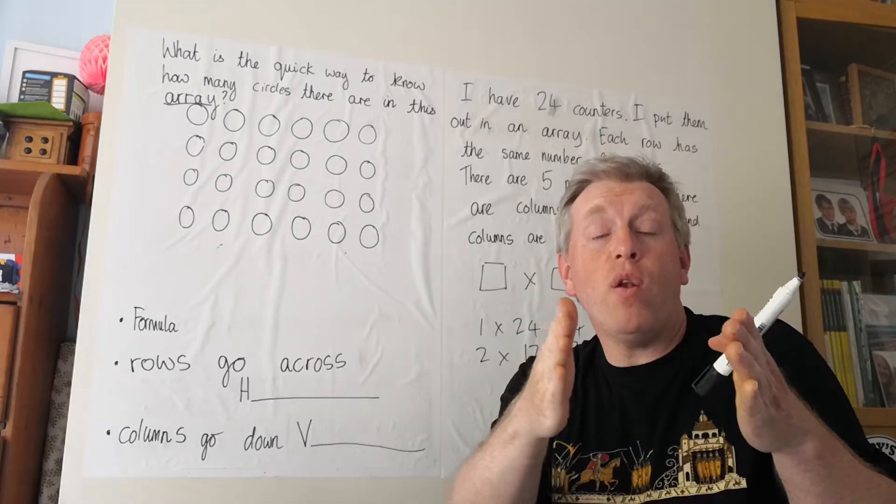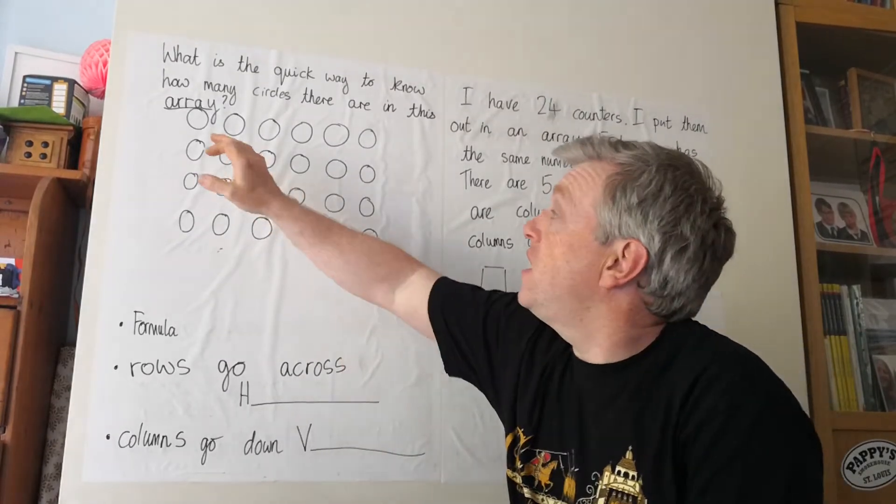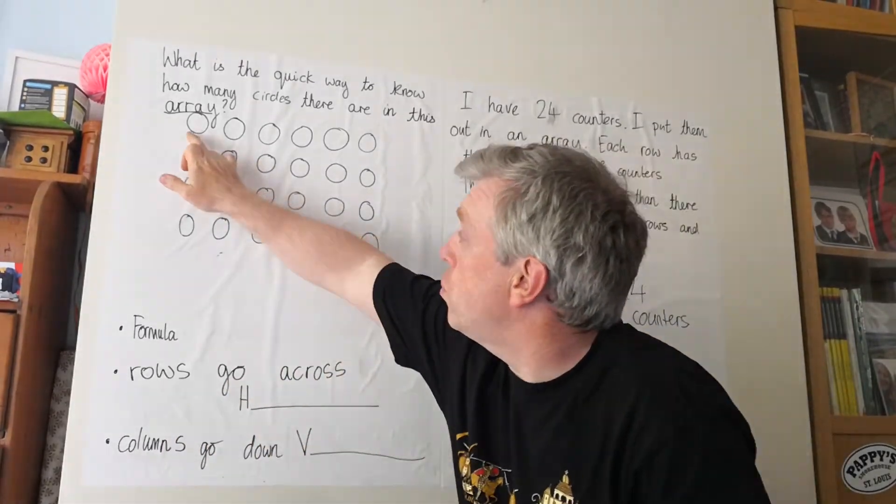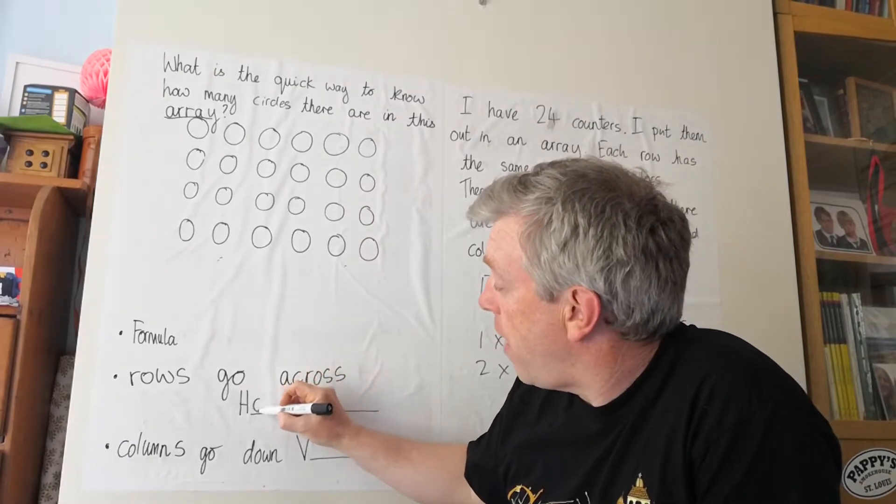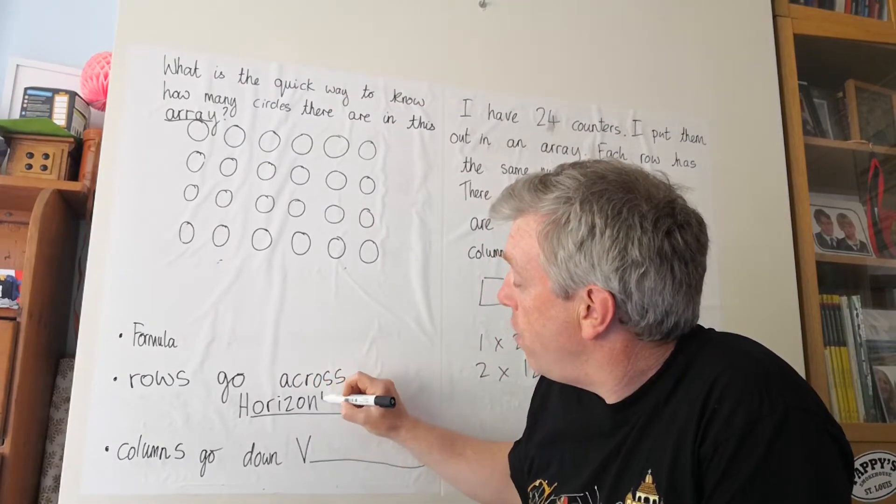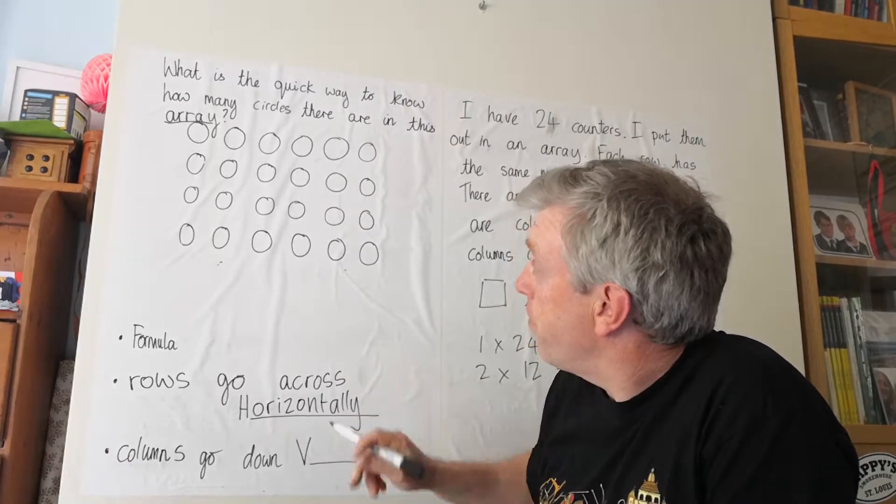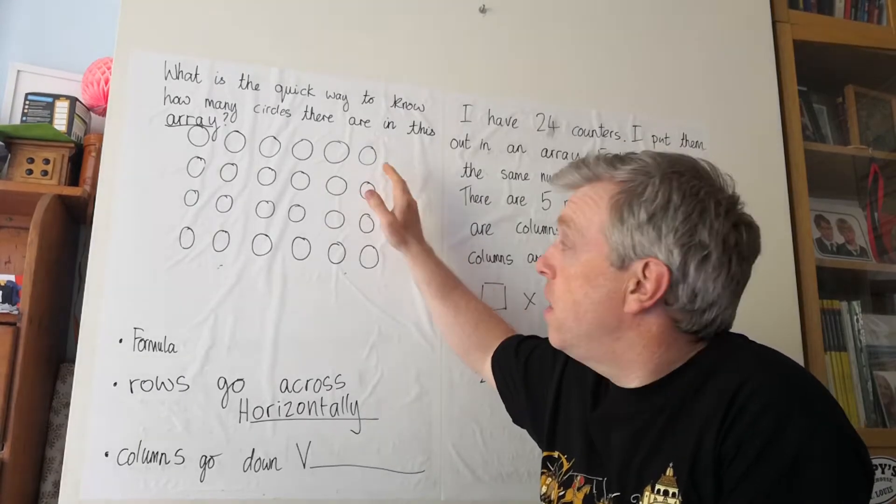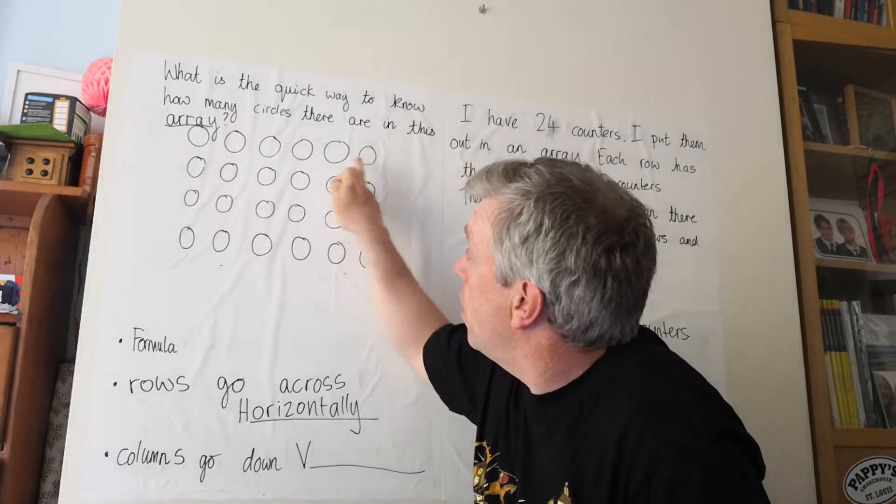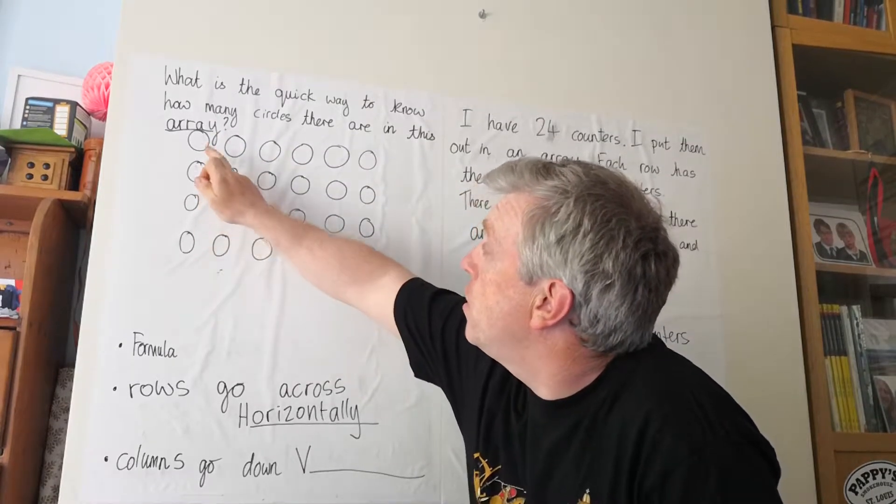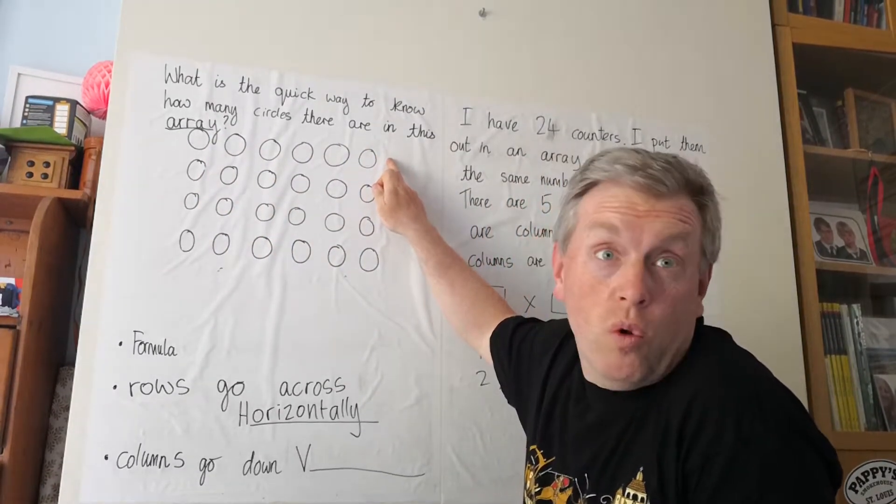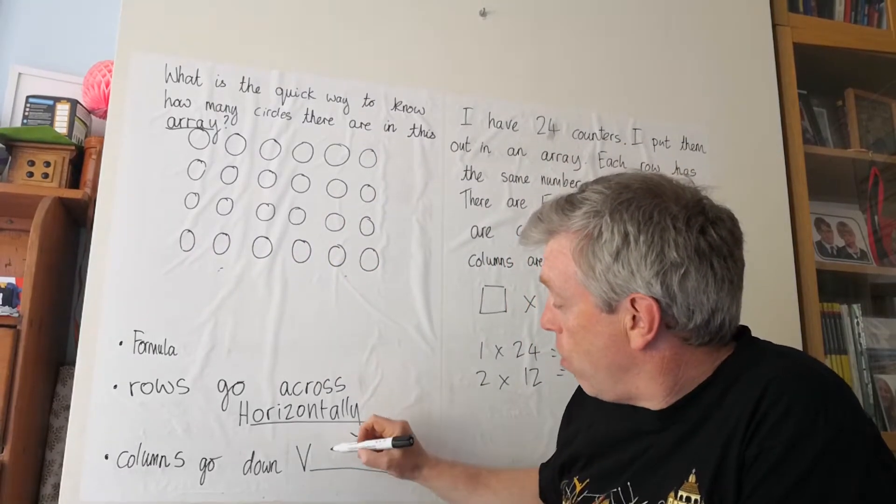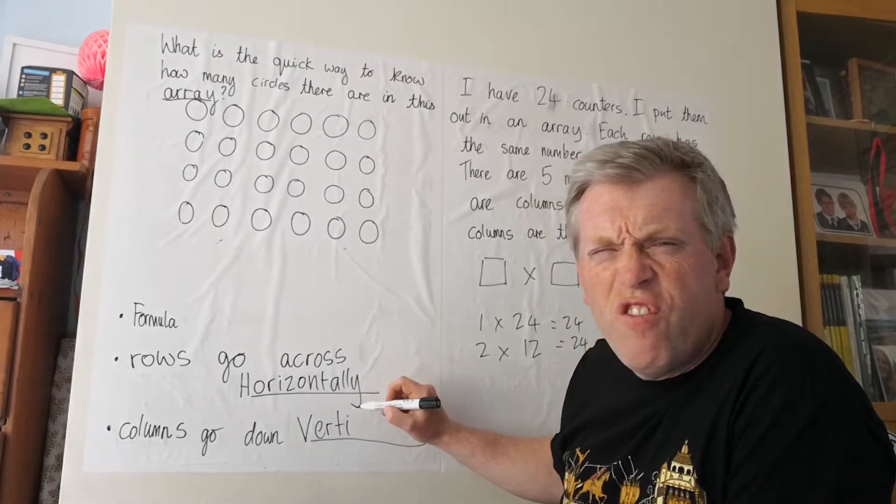An array in maths is when we have set something out in rows. Now remember, rows go across and that's the word for that is rows go horizontally. And each row must have the same number of things in it. And it's set out in rows going across and columns going down. So the rows all have the same amount in and the columns all have the same amount in. So columns go down vertically.